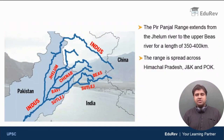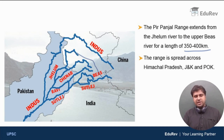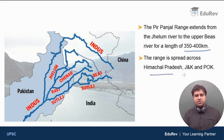The Pir Panjal range extends from the Jhelum river to the upper Beas river for a length of 350 to 400 kilometers. The Pir Panjal range is spread across Himachal Pradesh, Jammu Kashmir, and POK — Pakistan occupied Kashmir.